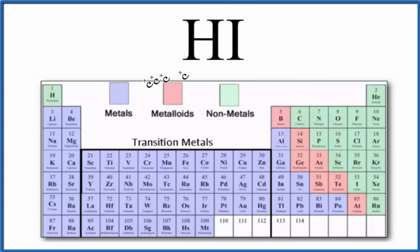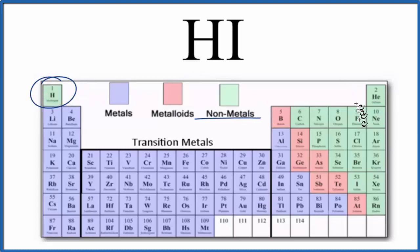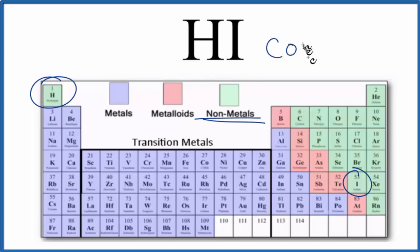We can look at the periodic table and see we have hydrogen here, which is a nonmetal, and then iodine right here, a nonmetal. When we have two nonmetals, we consider that to be a covalent compound. So, according to the periodic table, HI is a covalent compound.